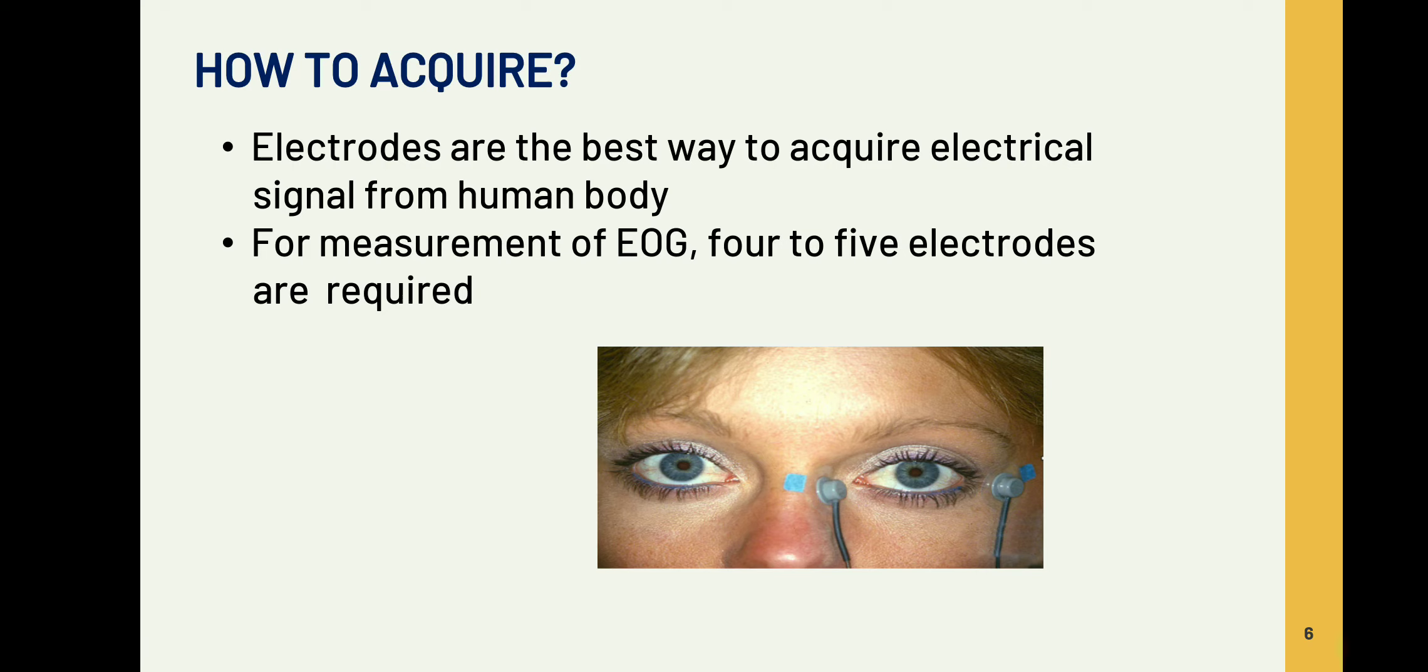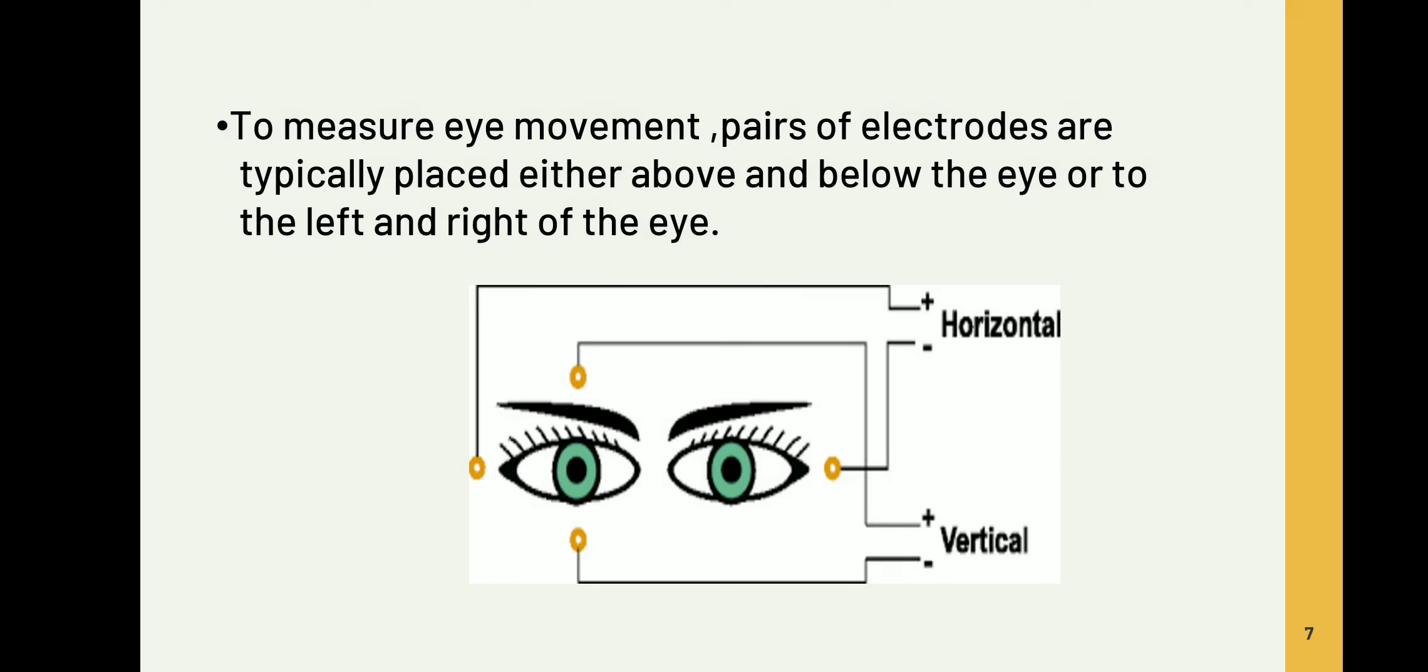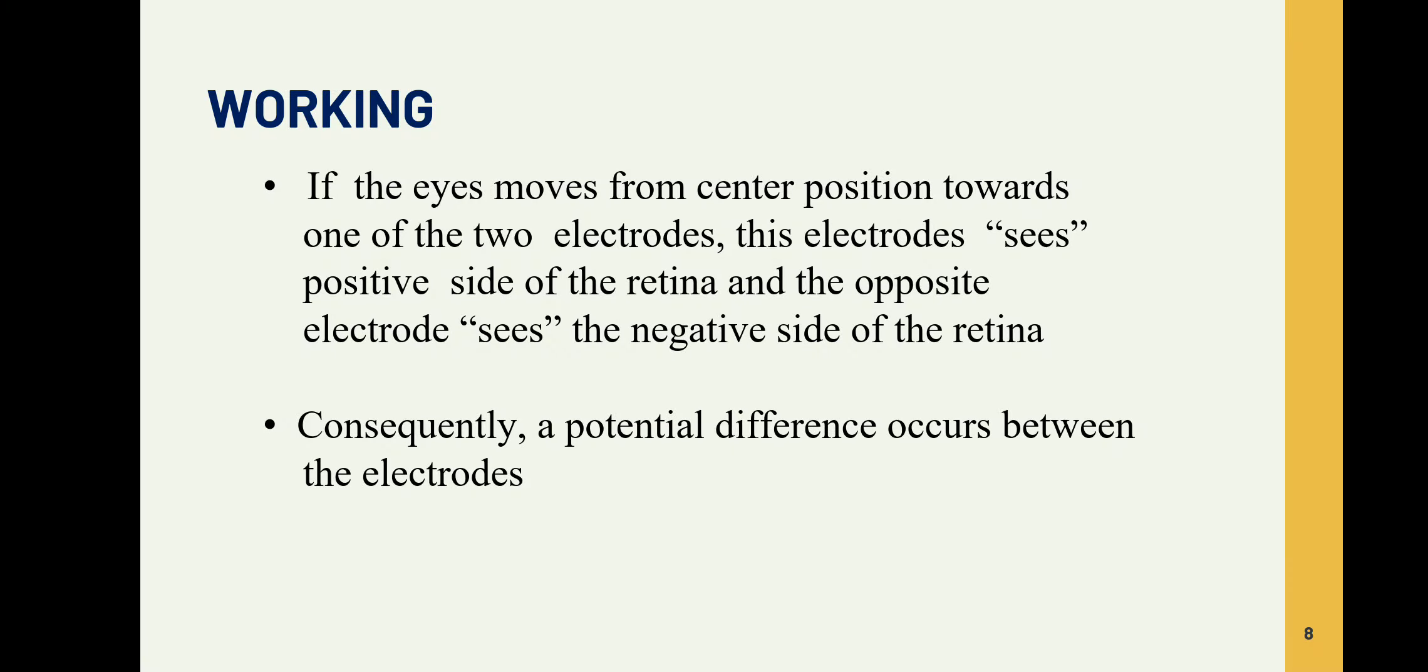Let's see what are the placements of the electrodes. For measuring the eye movement, we are supposed to place two electrodes or a pair of electrodes horizontally, that is left and right of the eye, and a pair of electrodes above and below the eye. So top and bottom two electrodes are placed, and left and right two electrodes are placed. These are the horizontal and vertical placement of electrodes.